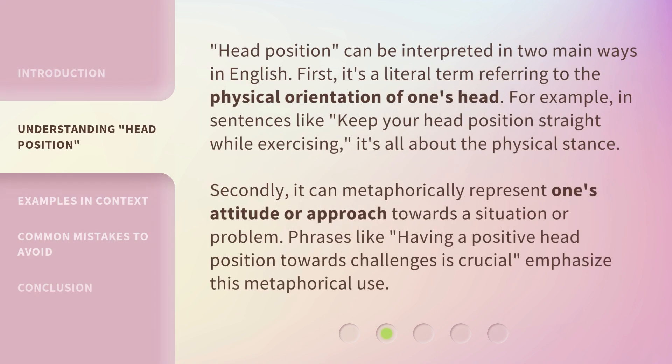Head Position can be interpreted in two main ways in English. First, it's a literal term referring to the physical orientation of one's head. For example, in sentences like 'keep your head position straight while exercising,' it's all about the physical stance. Secondly, it can metaphorically represent one's attitude or approach towards a situation or problem. Phrases like 'having a positive head position towards challenges is crucial' emphasize this metaphorical use.